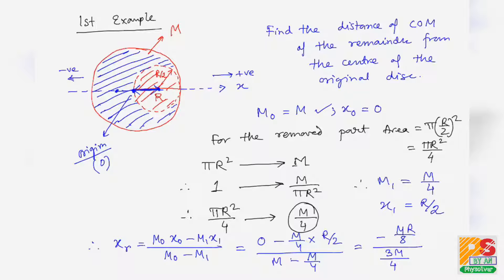The answer is −R/6. Therefore after removing the red portion, the center of mass will shift towards the left — negative direction — by an amount of R/6.